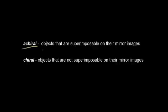Let us see what are achiral and chiral objects. Achiral objects are those that are superimposable on their mirror images. I am going to show you a coffee cup which can be an example for a chiral object. Chiral objects are those that are not superimposable on their mirror images.